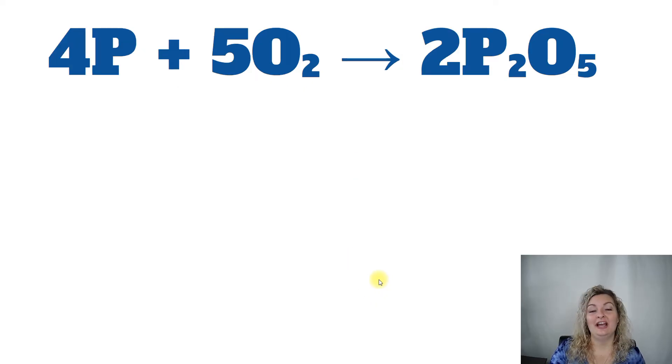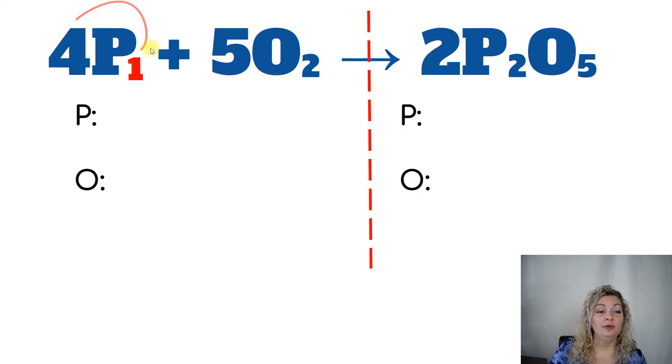But let's go ahead and look at the next example. Go ahead and draw your line in the middle. Set up your variables that you're working with, all of your different elements. And then you can see we have 4P. I already went ahead and did the 1 that is understood. Now you don't have to write that. I'm just writing that so you can see it. But it's not necessary to write that. So we're going to use our distributive property. 4 times that 1 gives you 4. Going over to the oxygen, 5 times the 2 gives us 10.